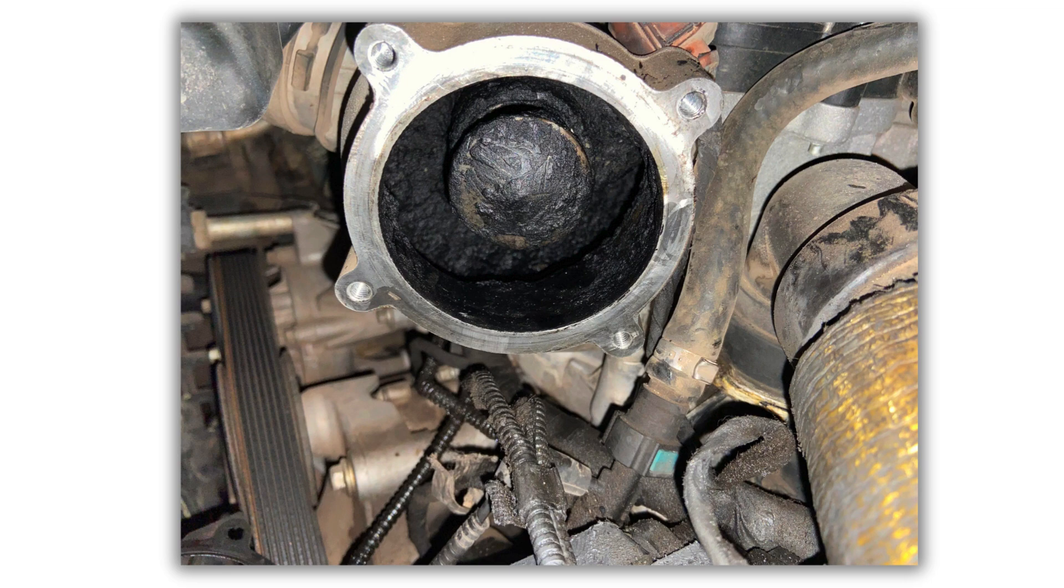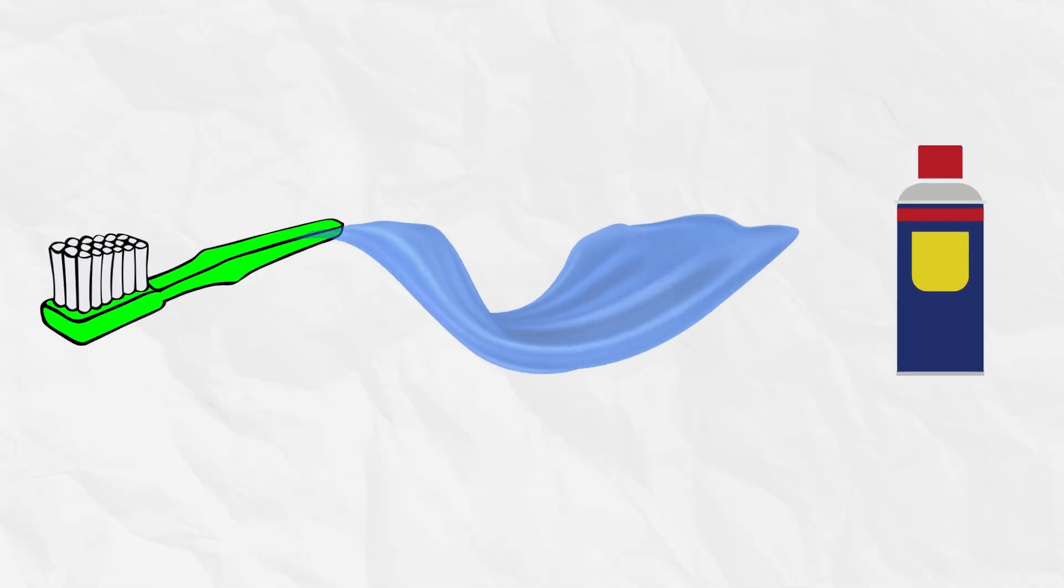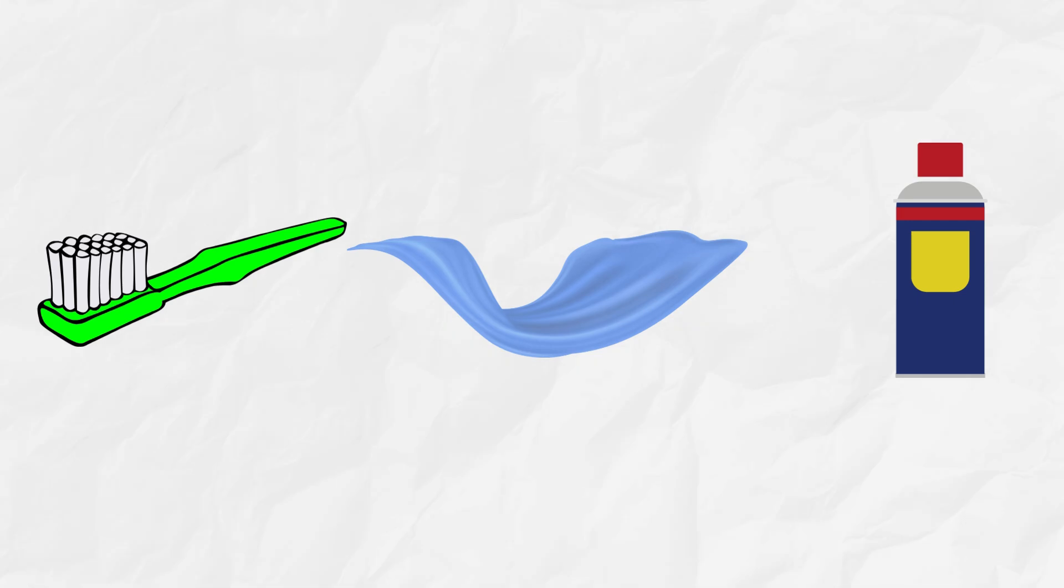In the case of a mechanical throttle body, try to clean it first before replacement. You should use an old toothbrush, sturdy blue paper towel and brake cleaner, or WD40 to clean the throttle body.